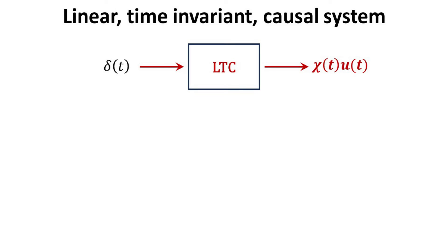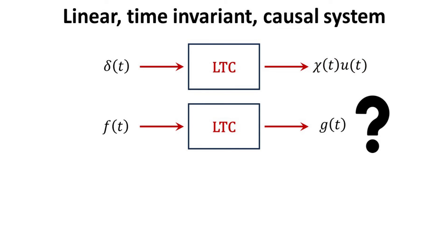We denote the impulse response function as chi. The step function ensures that there cannot be any response before the impulse. Now, what will be the output response for a general input function Ft? Let's denote the output to be Gt.